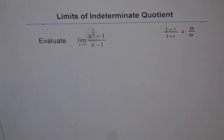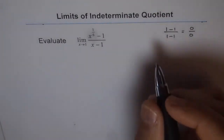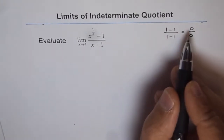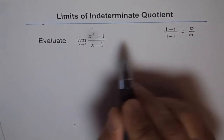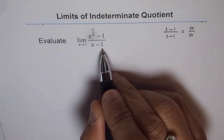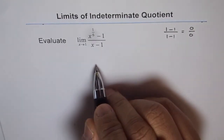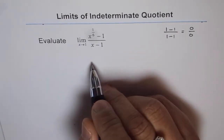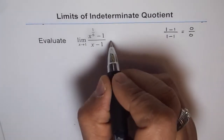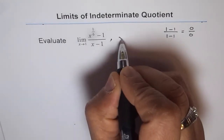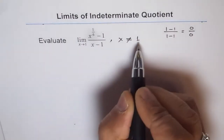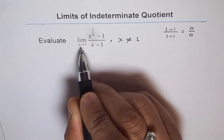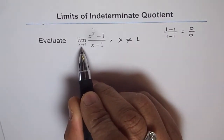To really evaluate it, we need to simplify and factor out x minus 1. Since x approaching 1 gives us 0 in both numerator and denominator, x minus 1 is a factor in both numerator and denominator. Note that x is not equal to 1 — 1 is not in the domain of this function — but the limit may exist.